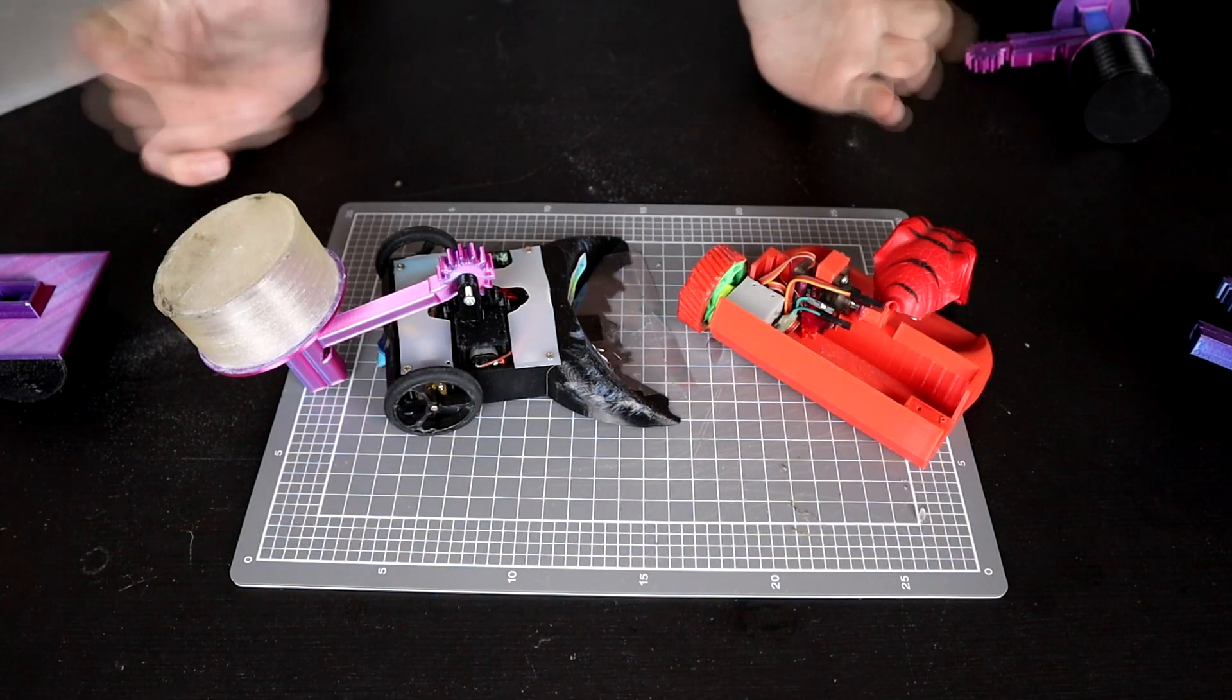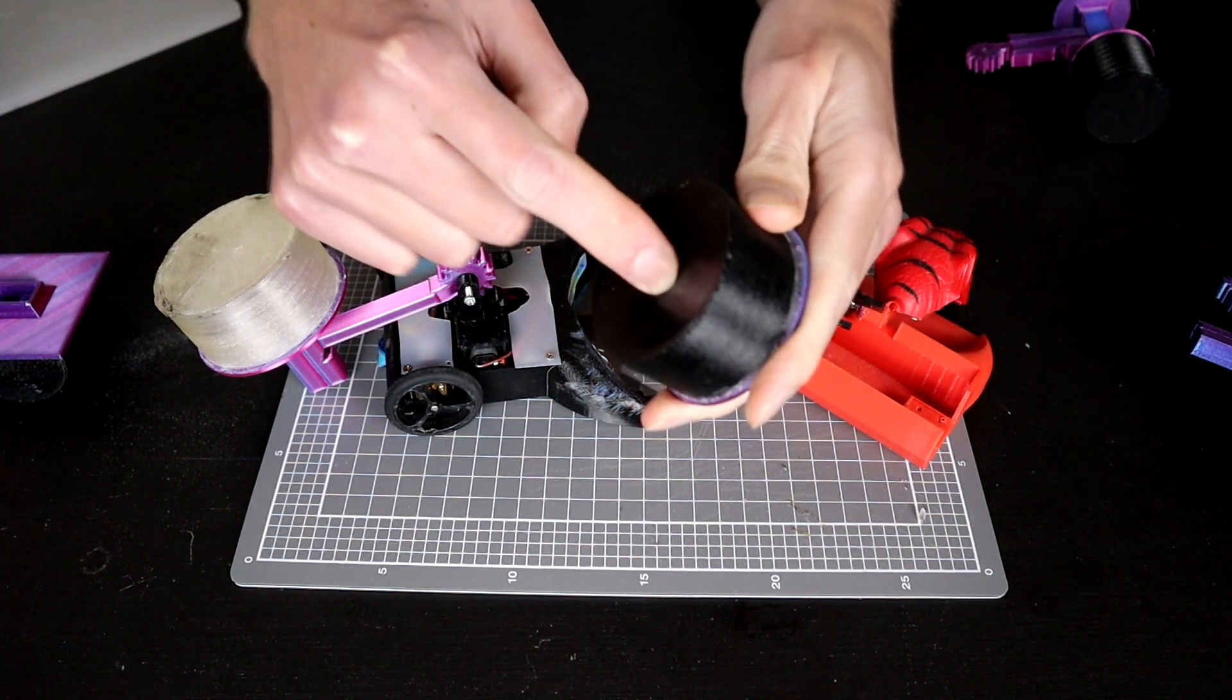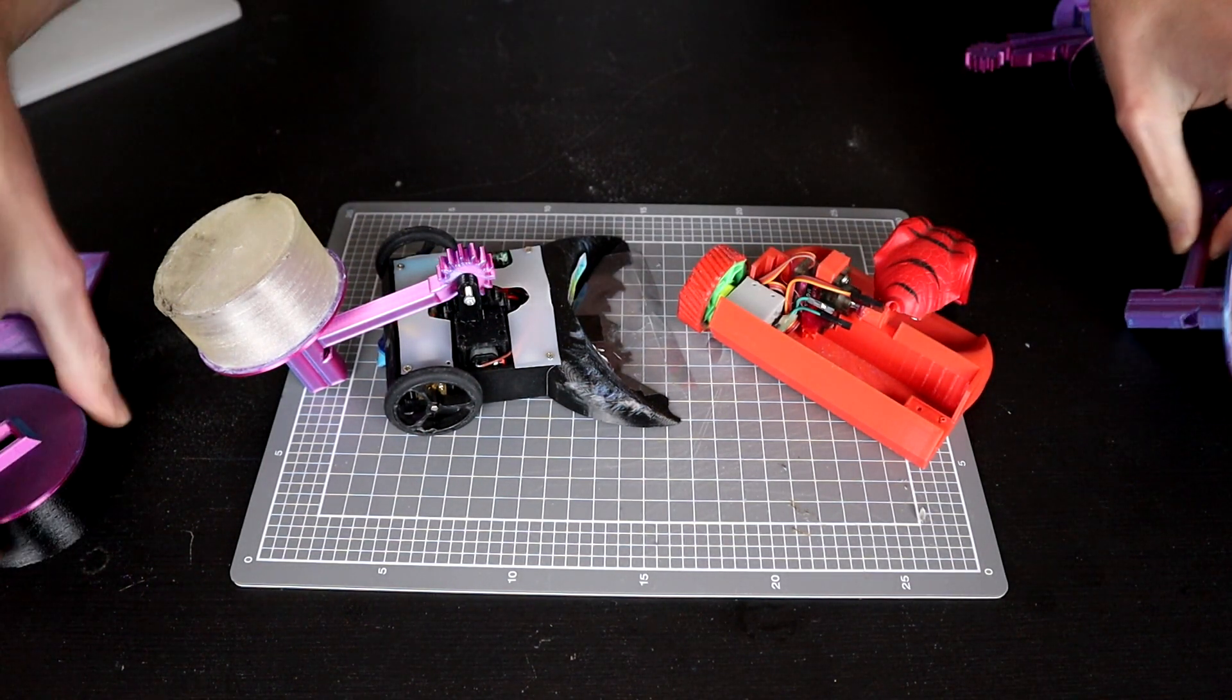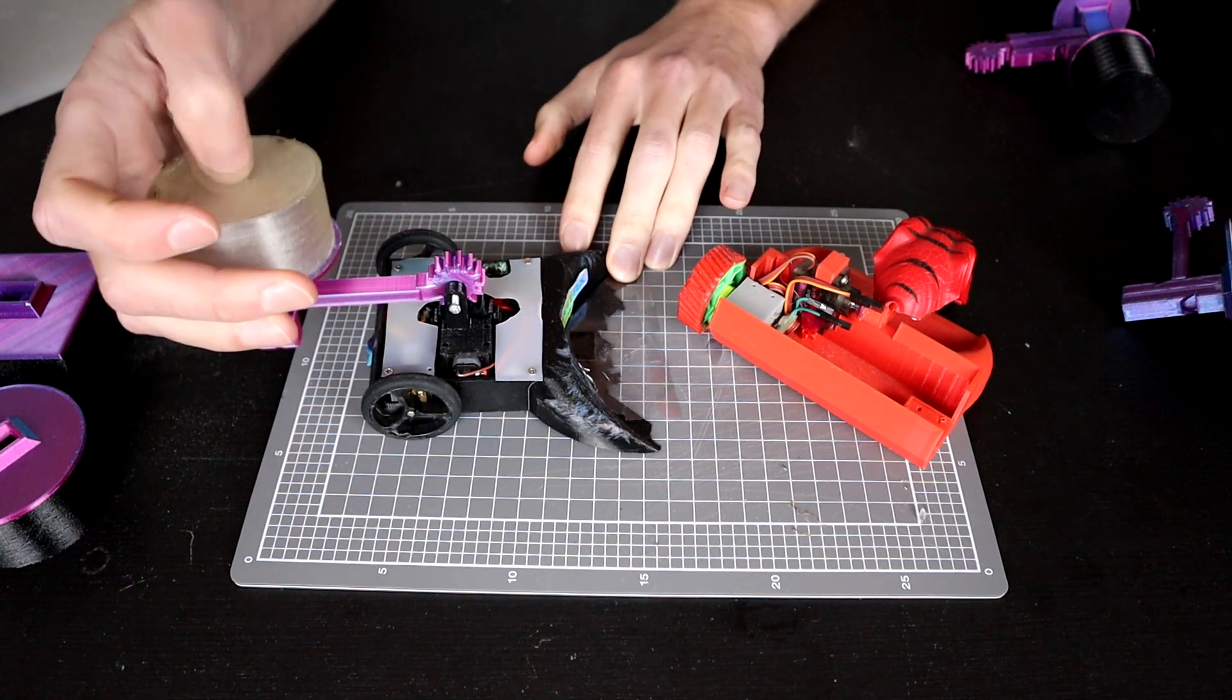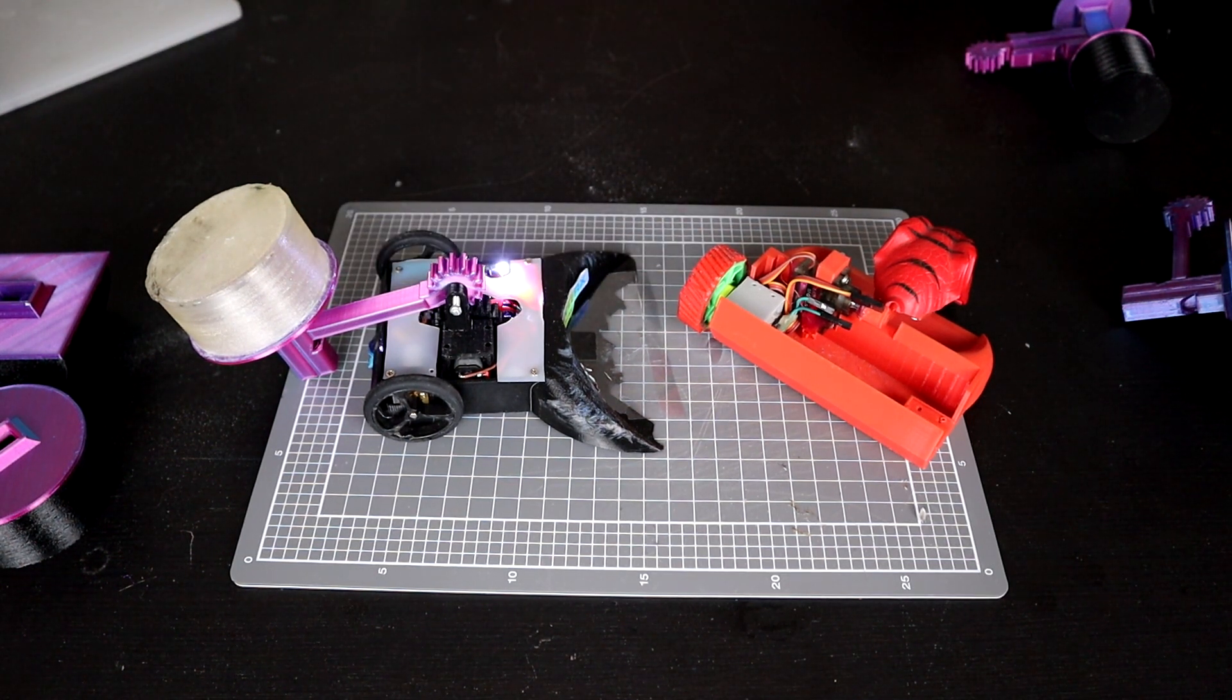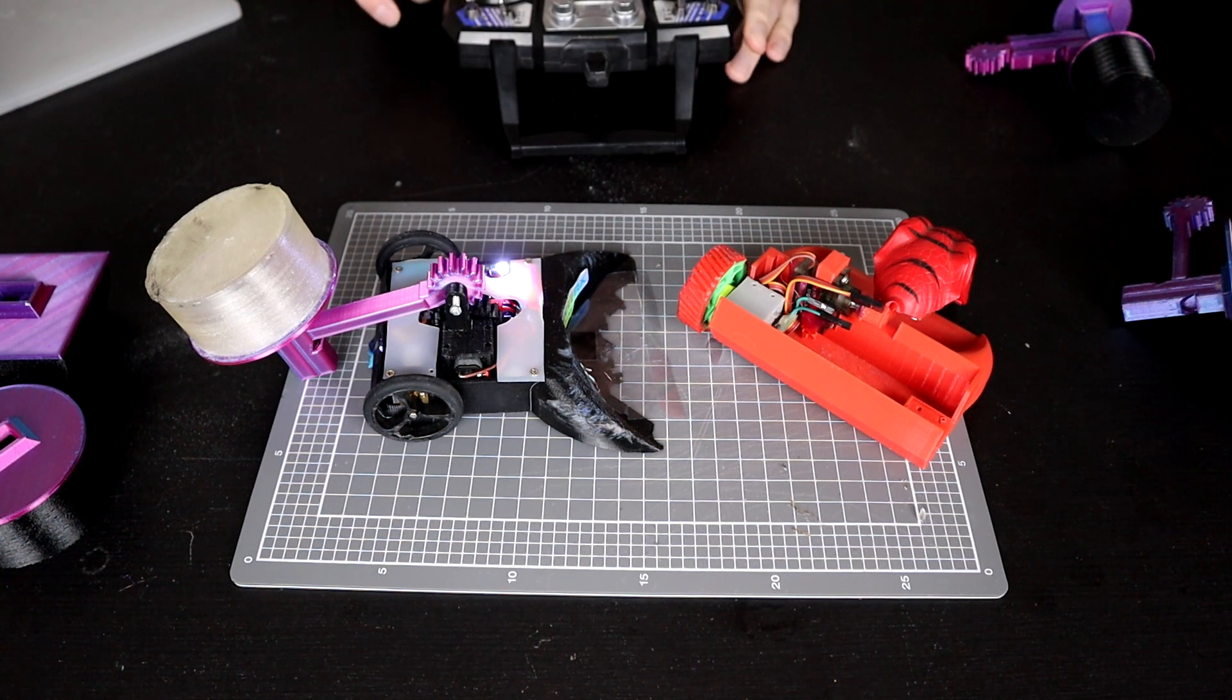All right. Well, I am officially out of ideas. I did the things I said I was going to do. I printed a new version with a softer base in it. This worked about the same as the old one did. And then I printed this one with this weird rubber material that I have no idea what it is. And it also works about the same. Let's just do that on camera so you know, so you can see what's going on here.